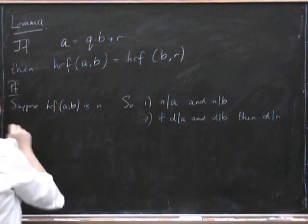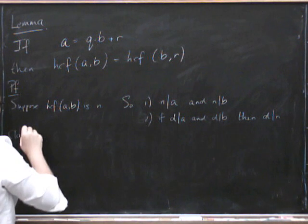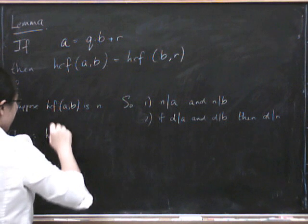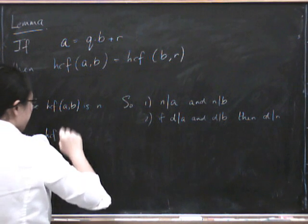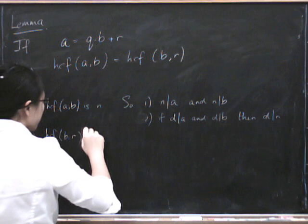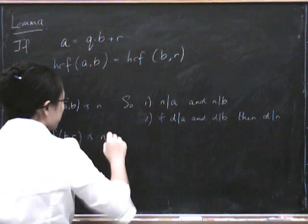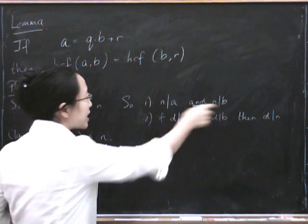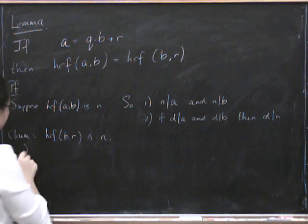then D has to divide our biggest one. Okay, so now we're going to claim that the highest common factor of B and R is also N. So we have to prove these two things for B and R.